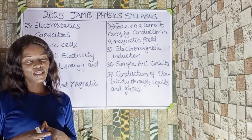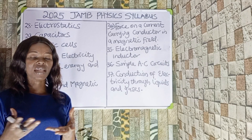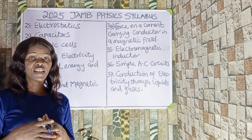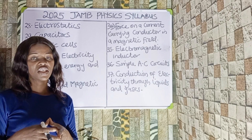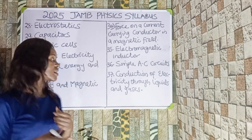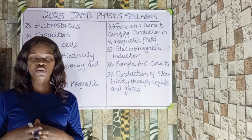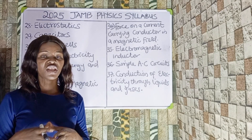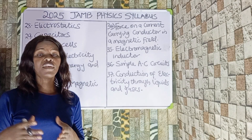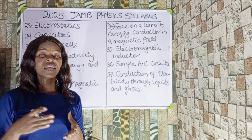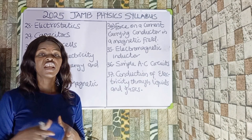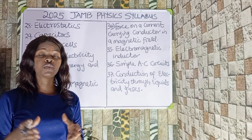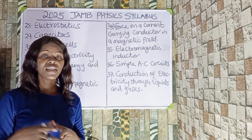Number thirty-four is electromagnetic induction. Under electromagnetic induction we should be looking at Faraday's Law, Lenz's Law, and transformers, including the energy losses in a transformer. Number thirty-five is the simple AC circuit — alternating current. We should know resistance, inductance, and capacitance in an AC circuit, and also resonance in an AC circuit.